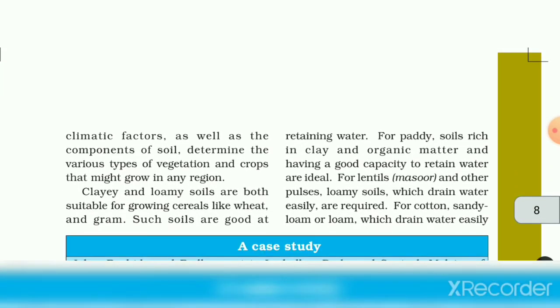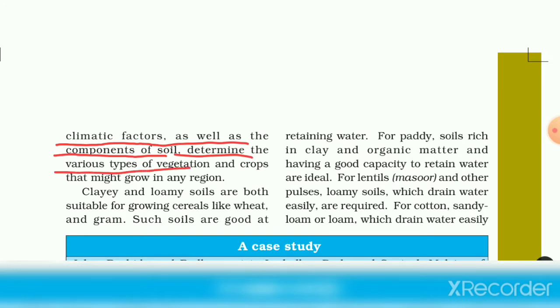The climatic factors as well as the components of soil determine the various types of vegetation and crops that might grow in any region.